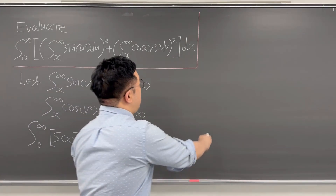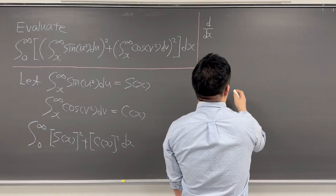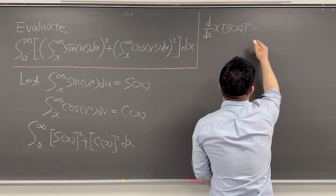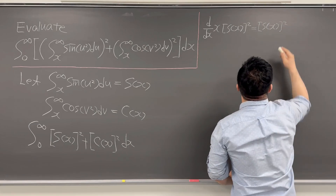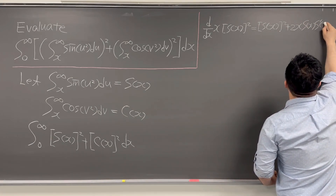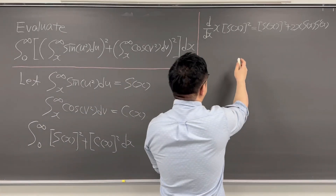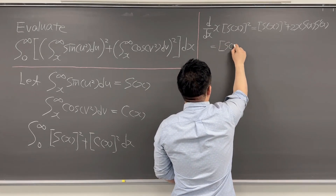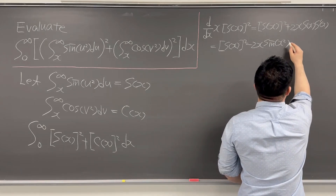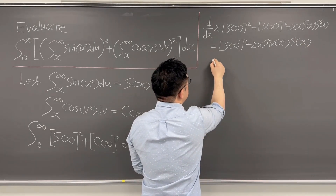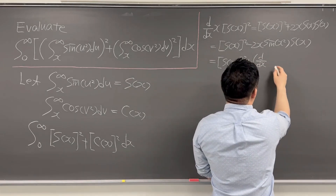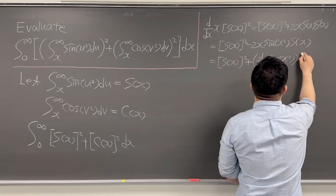Let's think about d/dx of x times S(x)². This is going to be S(x)² plus 2x times S(x) times S'(x). Now S'(x) = −sin(x²) by the fundamental theorem of calculus, so this becomes S(x)² minus 2x times sin(x²) times S(x).